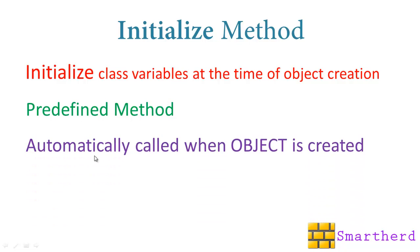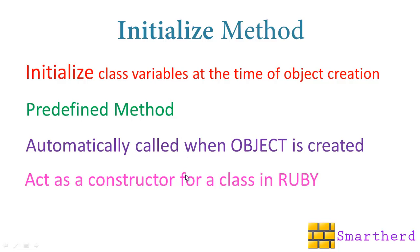Thirdly, it is automatically called when the object is created. When you create an object — object equals class name dot new — this initialize method is automatically called. Fourthly, it acts as a constructor for a class in Ruby. If we have done C++ or Java programming, we have a class, and inside the class we have a constructor. Whenever we create an object of the class, that default constructor is automatically called. In a similar way, when an object is created here, this initialize method is automatically called. So it acts as a constructor.